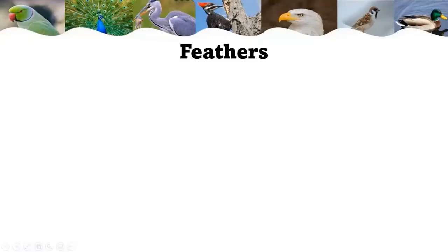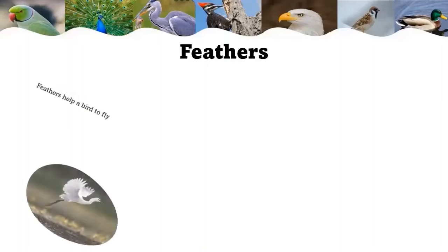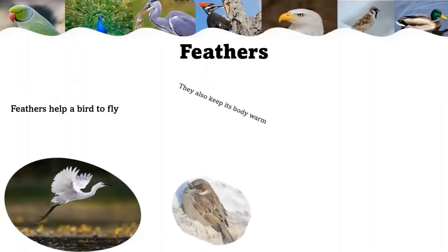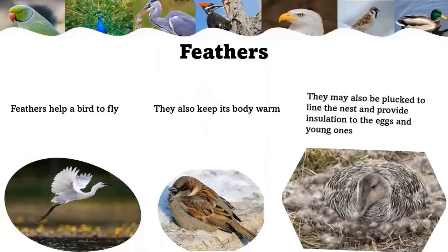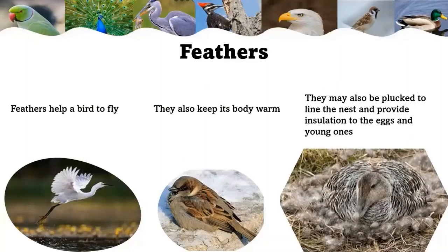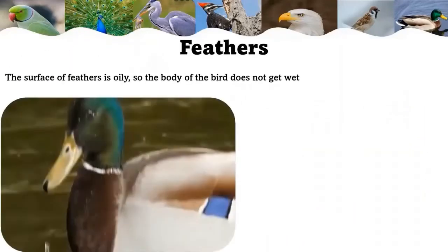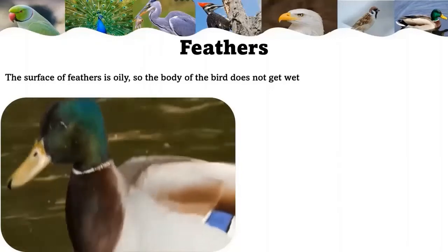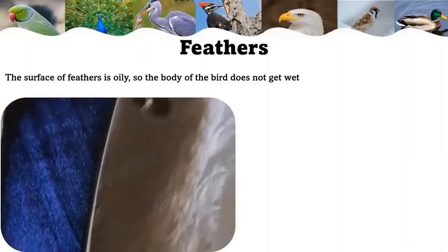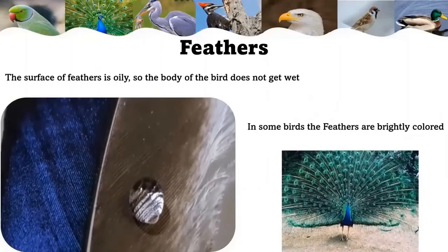Let us see a small introduction about feathers. Birds' feathers are designed to be very light but very strong, flexible but very tough. Feathers help a bird to fly and also keep its body warm. They may also be plucked to line the nest and provide insulation to the eggs and young ones. The surface of feathers is oily, so the body of the bird does not get wet. In some birds, the feathers are brightly colored.